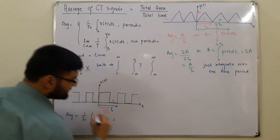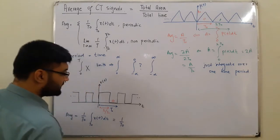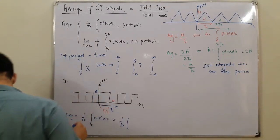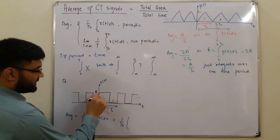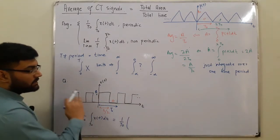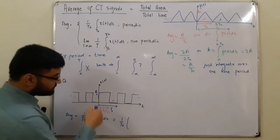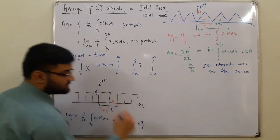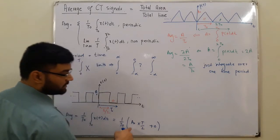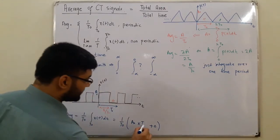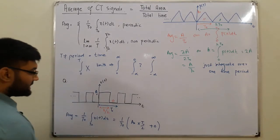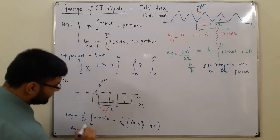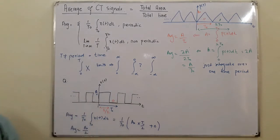So we have (1/t₀) times the two parts: the first part gives a₀ multiplied by t₀/2 (a rectangle of height a₀ and width t₀/2), and the second part contributes 0. This gives (1/t₀) × a₀ × (t₀/2). The t₀ cancels out, and the average value of the clock pulse comes out to be a₀/2.